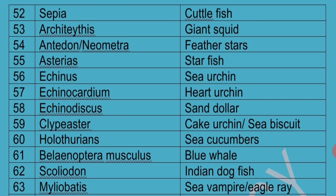Balaenoptera Musculus is called Blue Whale — the scientific name of the biggest mammal. Scoliodon is called Indian Dogfish because of its great olfactory capacity; it can smell a small drop of blood from 3 kilometers away, giving it keen olfactory perception.